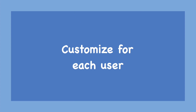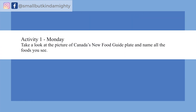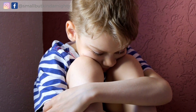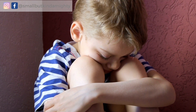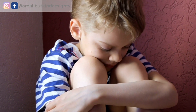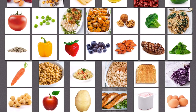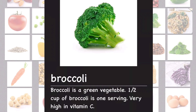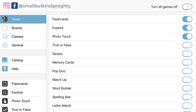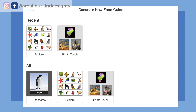Going back to Owen's Canada's new Food Guide assignment — his teacher wanted him to look at the Food Guide plate and name all the foods he could see. Now Owen can't talk, he can't write very well with a pen, and getting him to use his talker or type answers to 'what's this food?' would be pretty boring for all parties. Instead, we can play the explore and photo touch games in the Canada's new Food Guide board, and if I want to make sure he doesn't get distracted I can go into his user profile and restrict the games for that board to just explore and photo touch.